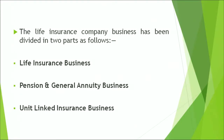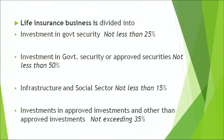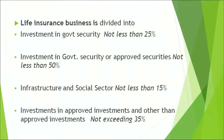When we talk about life insurance company business, these have been divided broadly into two parts: first is the life insurance business, which includes pension and general annuity business, and unit linked insurance business. For life insurance business, investment in government securities should not be less than 25%. Investment in government or approved securities should not be less than 50%. Infrastructure and social sector should not be less than 15%. Investment in approved and other than approved investments should not exceed 35%.